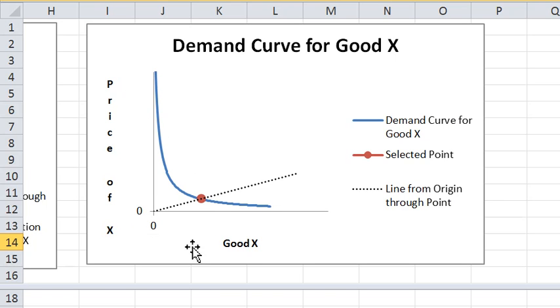Now I'm plotting the price of X against the quantity of good X. And as I lower the price, let's lower it again, I get more of good X. As I raise the price, I get less of good X. So the demand curve for X as we expect slopes down.